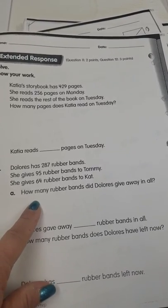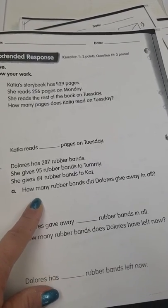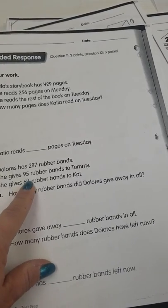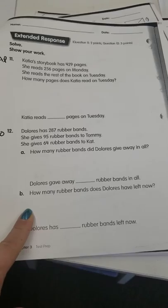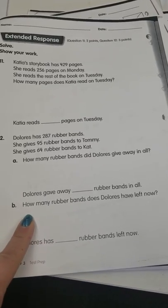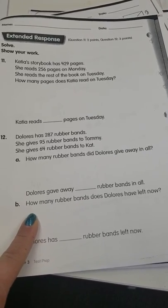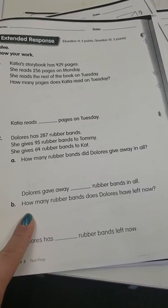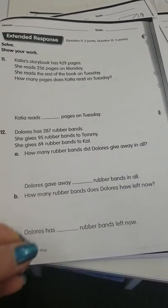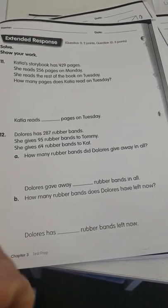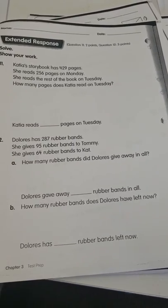So they want to know how many rubber bands does she give away. So you're going to have to go back and see. What did she give to Tommy? What did she give to Kat? The second step of this problem says, how many rubber bands does Dolores have left now? So you have to look at how many she started with. Then she gave some away. What does she have left?